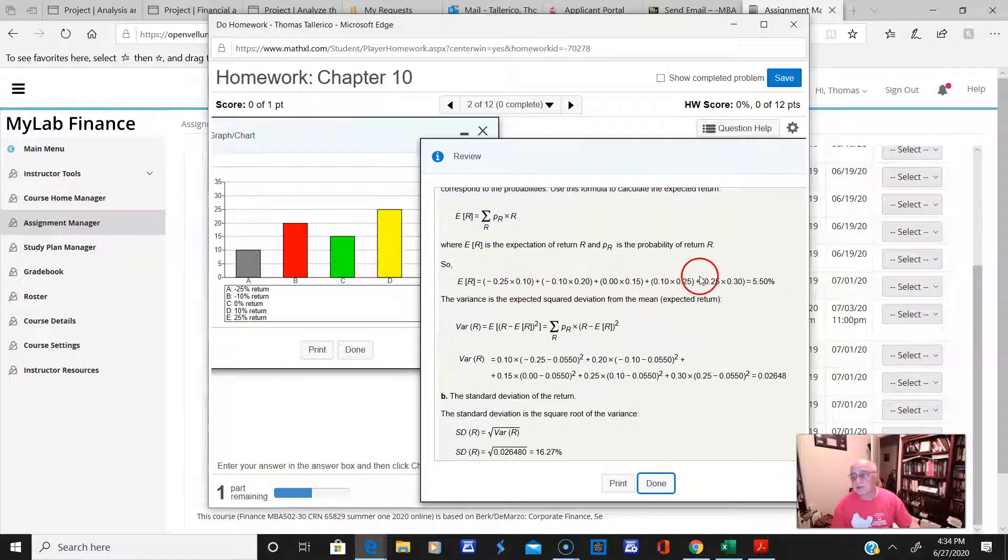And then you just add them up, and you should get, I have to move it over a little bit, you should get 5.5% if their math is correct. I didn't check their math, but if you follow this and their numbers are correct, you should match that.